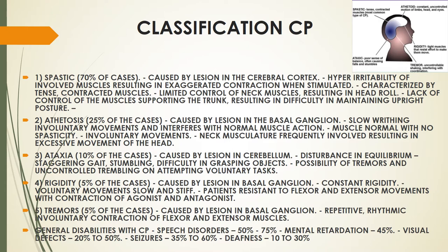Spastic is the most commonly found type of cerebral palsy, and in this the muscles are tense and contracted. Then in athetoid there is constant uncontrolled motion of the limbs, head, and eyes.